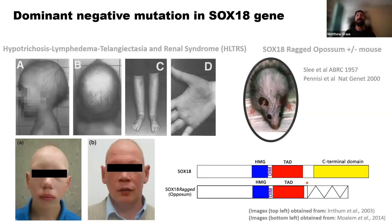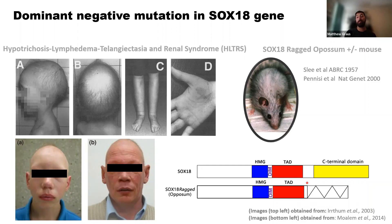In our lab, we use a genetic disease model specifically for SOX18, because it has a dominant negative mutation. Mutations within SOX18 cause blood and lymphatic vascular defects in humans—a disease called HLTRS. Individuals with HLTRS exhibit leaky lymphatic vessels, cardiovascular defects, renal disorders, and sparse hair follicle development. There is also a mouse counterpart to these mutations called RAGGED. The same mutation occurs in both humans and mice, which is helpful for tool development, allowing us to assess the mechanism in a mouse model.